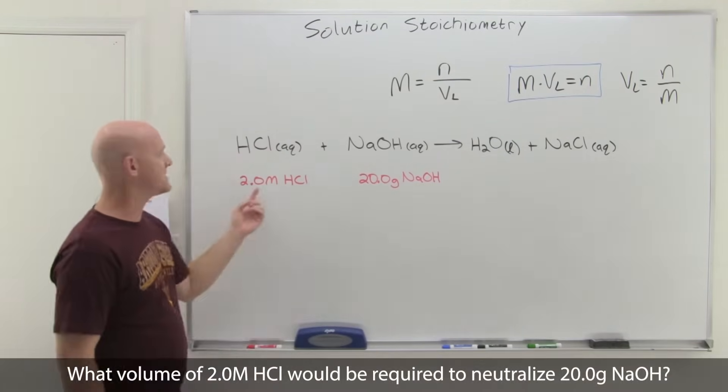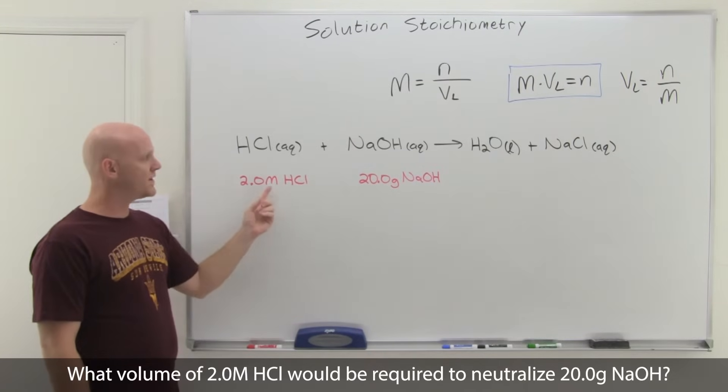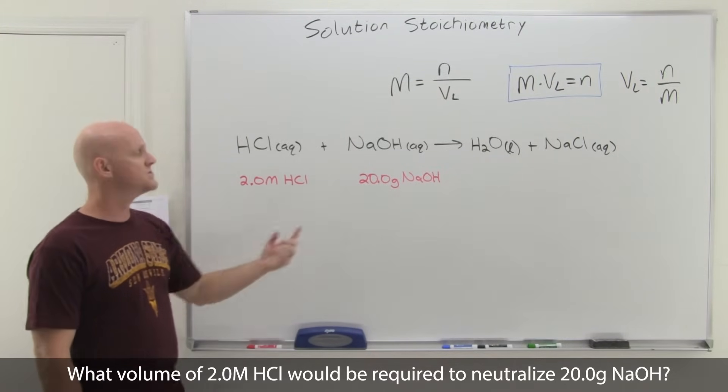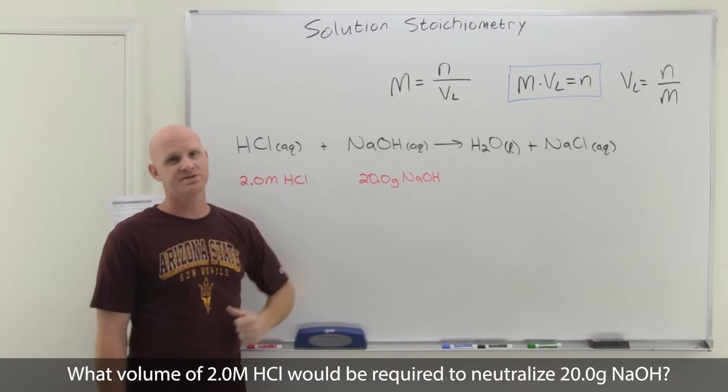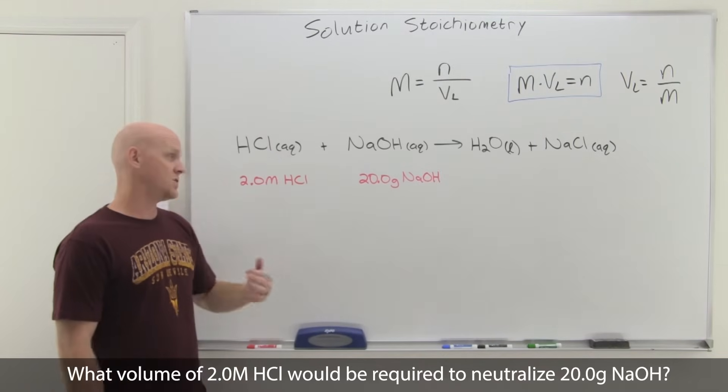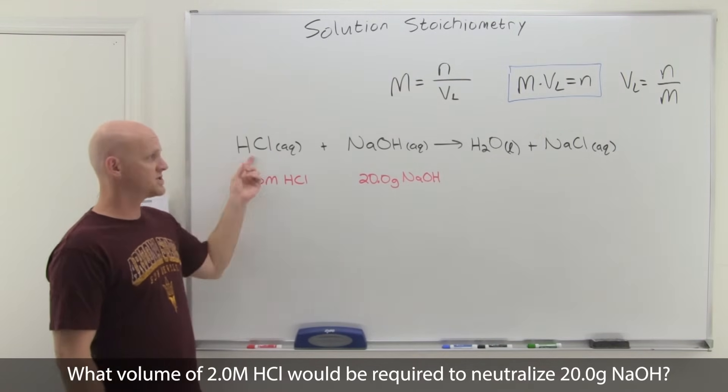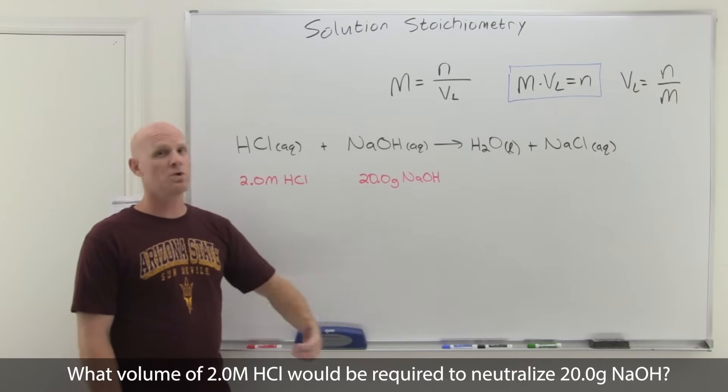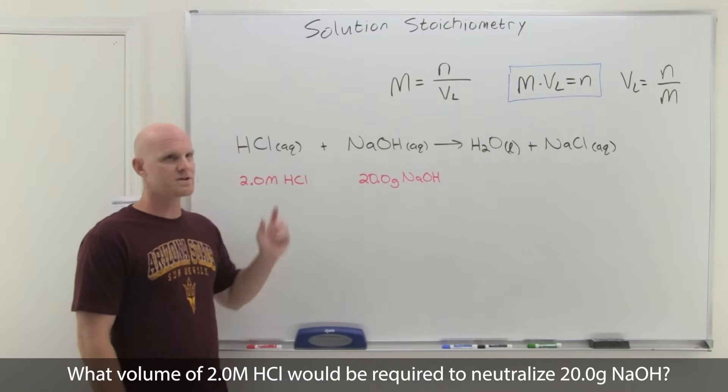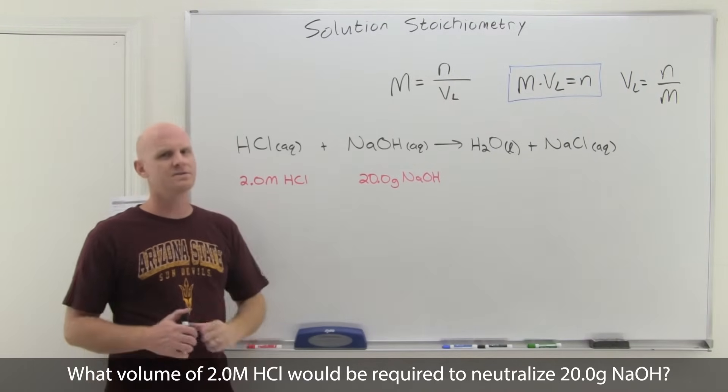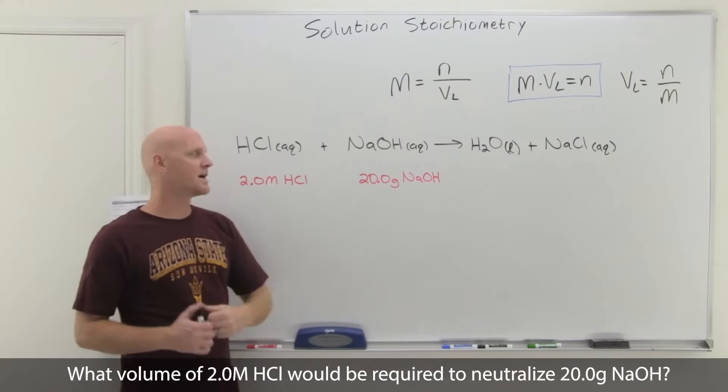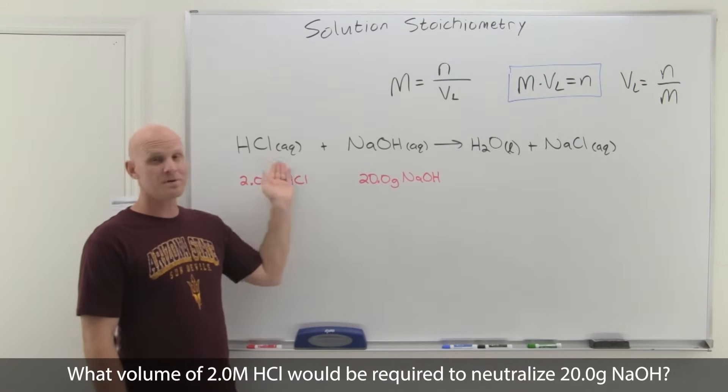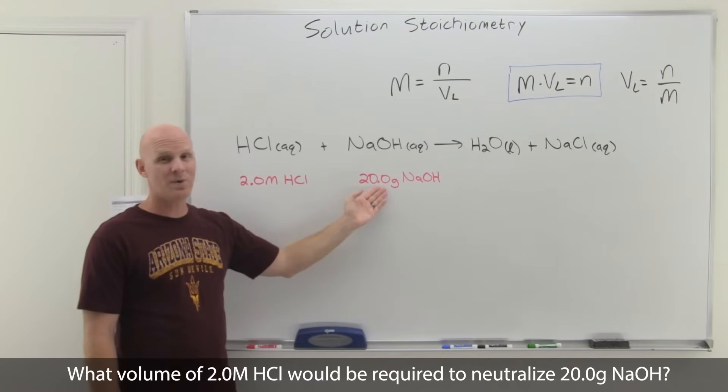Now in this question, we're trying to find the volume of 2.0 molar HCl needed to neutralize 20.0 grams of NaOH completely. If I said how many moles of HCl are required to neutralize 20 moles of NaOH, you'd say 20 moles because it's a one-to-one ratio. But we're going to make this harder because I didn't give you the moles of either one. I gave you the grams of NaOH and the molarity of HCl as part of a solution.